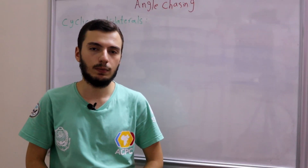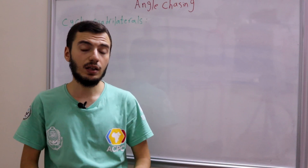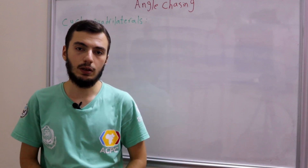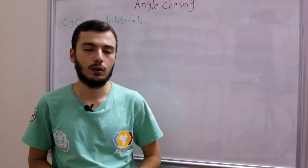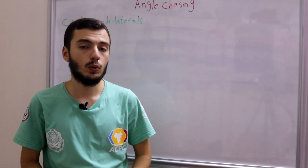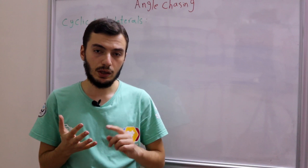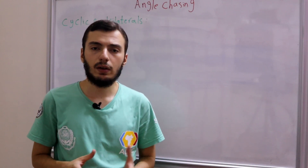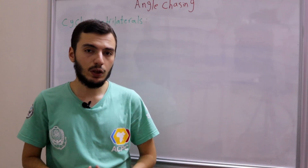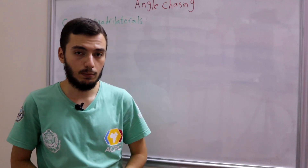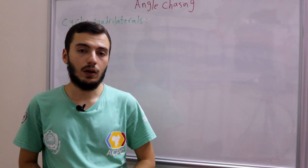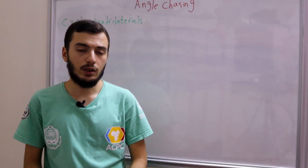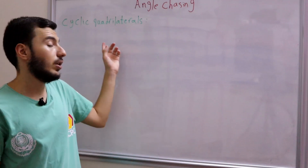Hi everyone and welcome to my YouTube channel. We're continuing our geometry playlist and in this video we'll be discovering a very important new principle in geometry for Math Olympiad. So far in our geometry course, we've discussed the centers of triangle — the orthocenter, the incenter, and the circumcenter — and did some angle tracing related to them. In this video we'll be introducing a very important principle: cyclic quadrilaterals.